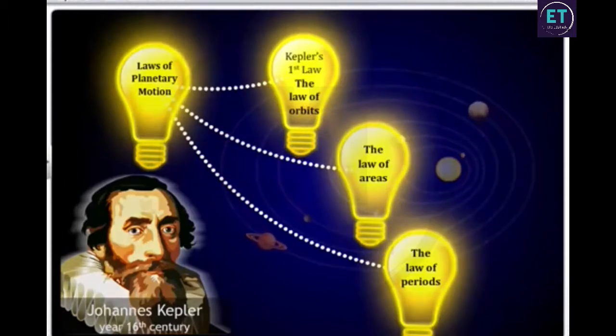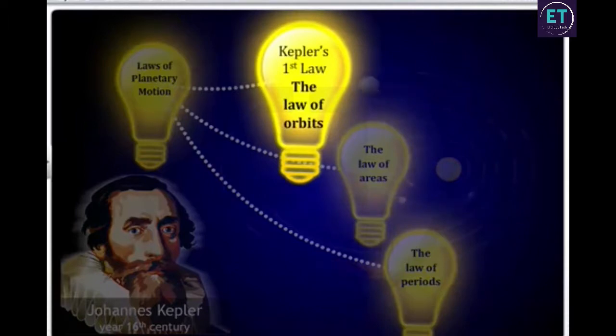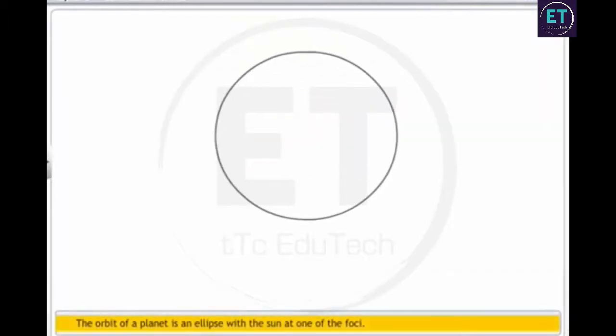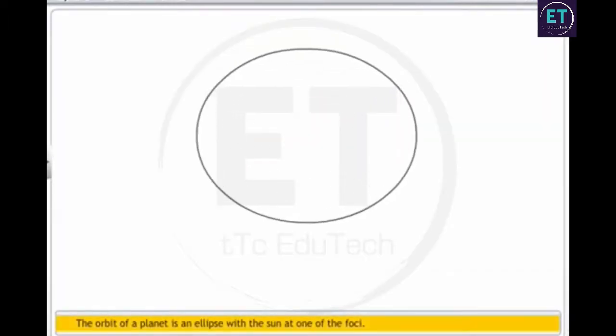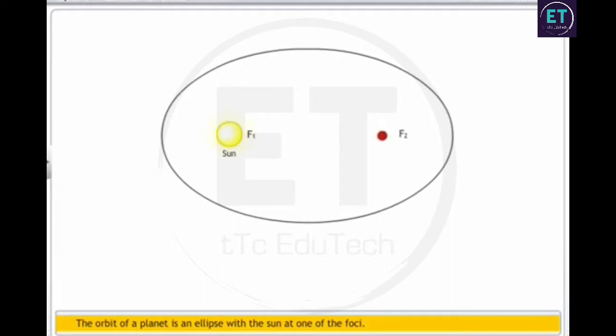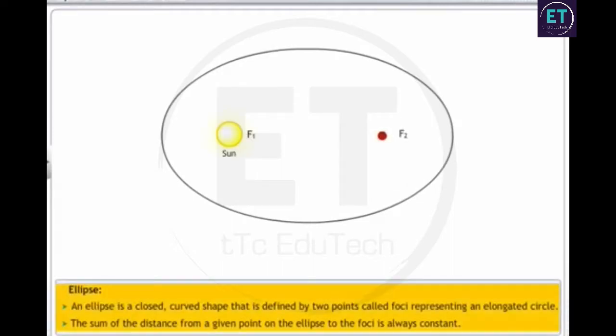Kepler's first law, the law of orbits, states that the orbit of a planet is an ellipse with the sun at one of the foci. An ellipse is a closed curved shape that is defined by two points called foci, representing an elongated circle.